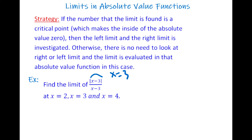It says find the limit at x equal to 2, x equal to 3, and x equal to 4. x equal to 3 is a critical point because it makes the inside of the absolute value 0, so let's take a look at that case last. First let's handle x equal to 2 and x equal to 4.